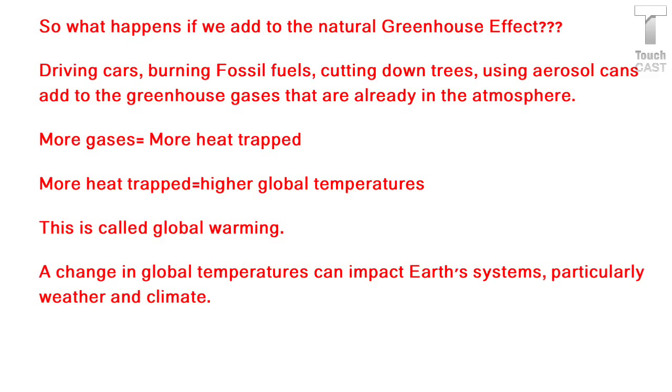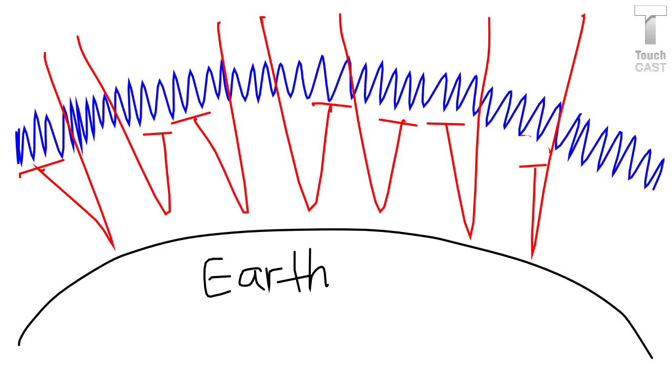A change in global temperatures is going to impact several of Earth's systems, and in this unit we'll focus particularly on weather and climate. Here you can see that a thicker layer of greenhouse gases results in more heat being trapped. This week we're going to focus on greenhouse gases, the greenhouse effect, and global warming. At the end of the week, you'll watch a video called Too Hot Not to Handle, and see ways that you, as an eighth grader, can help keep some of this from happening.